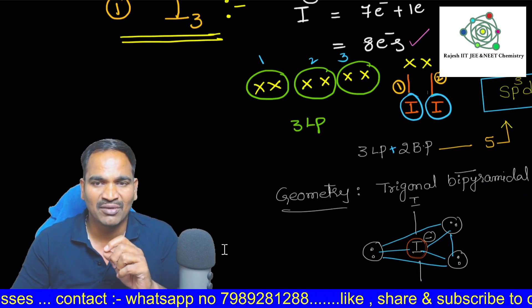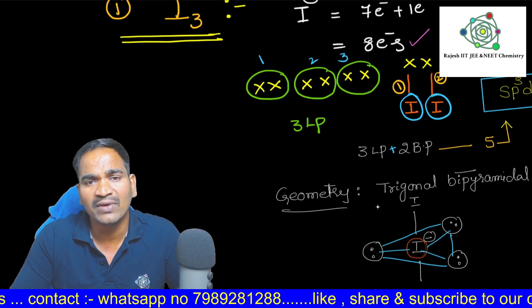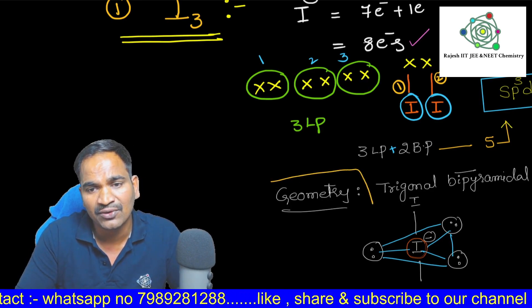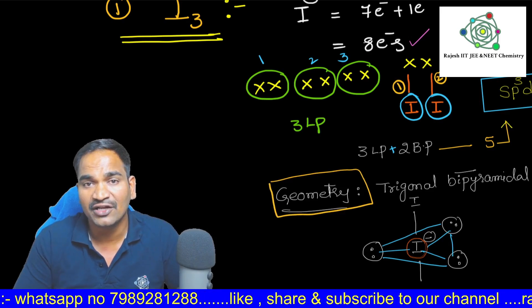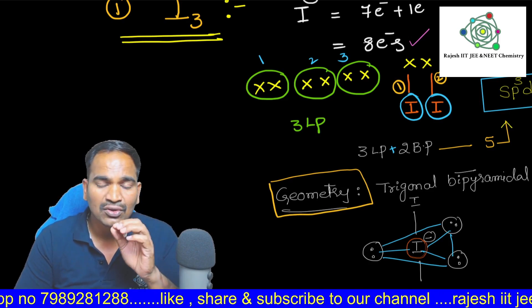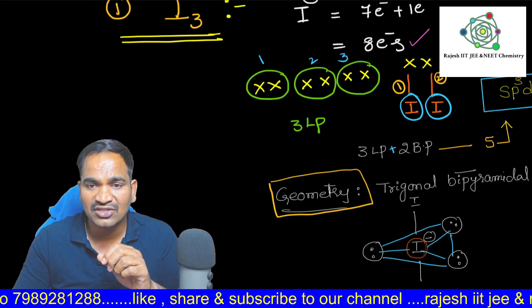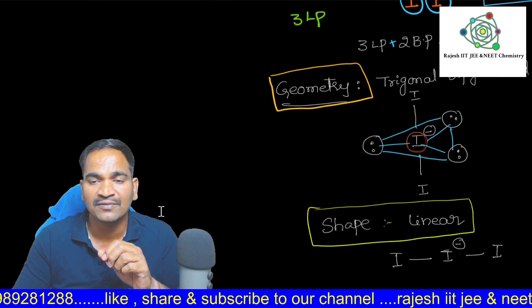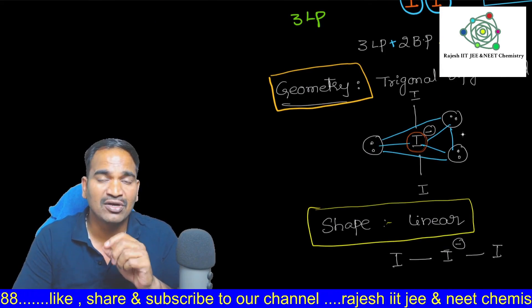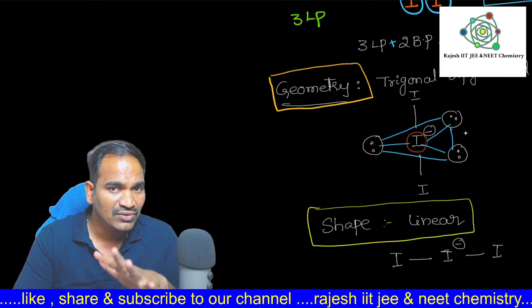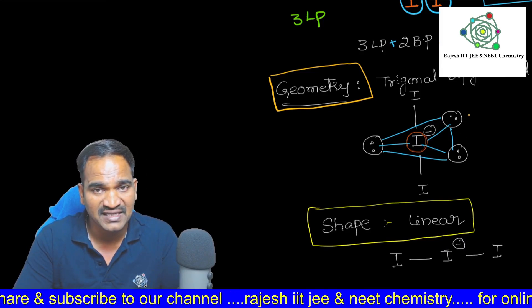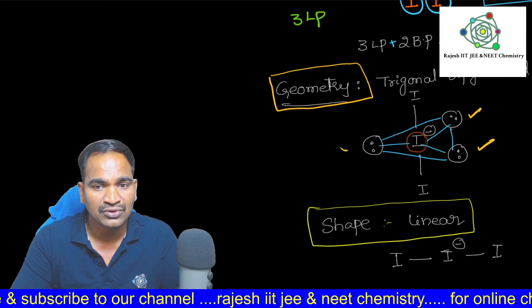Now coming to the geometry. If you want to explain the geometry of the given molecule, you need to consider lone pairs also. Therefore, the geometry of the molecule will be trigonal bipyramidal. Because I already told you, we need to consider the lone pairs which are present on the central atom. Three lone pairs are there, 1, 2, 3.